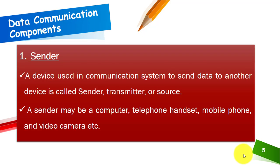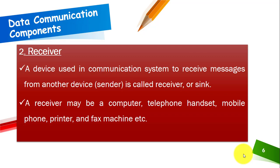The first component is the sender — a device used in a communication system or network to send data to any other device. It is also known as a transmitter or source. A sender may be a computer, a telephone handset, a mobile phone, or a video camera.